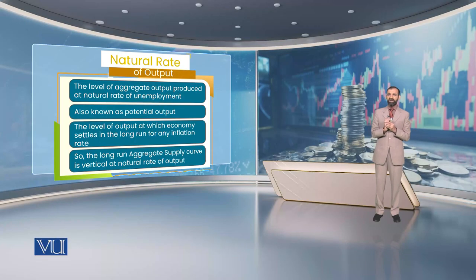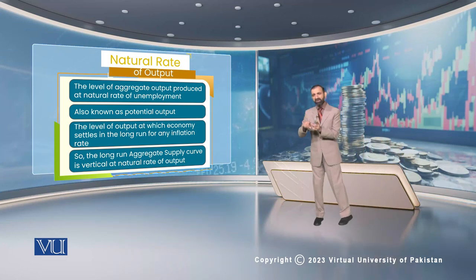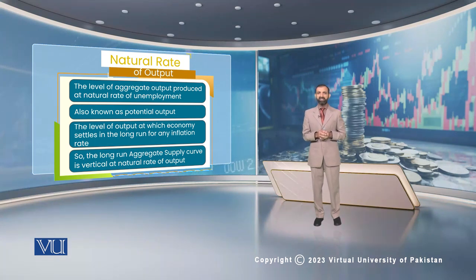Long run میں output labor کی full utilization اور capital و technology کی availability سے determine ہوتی ہے، اس لیے اس کا inflation rate سے کوئی تعلق نہیں ہوتا۔ Long run aggregate supply curve، potential output یعنی yp کی value پہ vertical ہوتا ہے — یعنی inflation کی کوئی بھی value ہو، long run میں output potential output کے equal رہتی ہے۔ Economy اس سے اوپر produce نہیں کر سکتی جب تک labor کو normal capacity پہ use کیا جائے۔